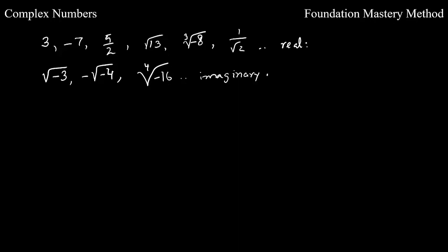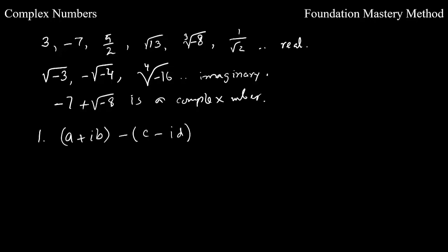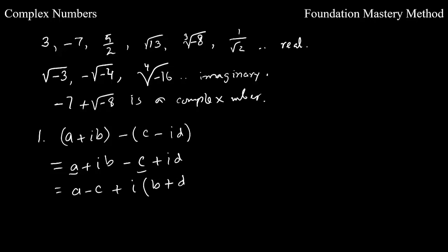When you combine real and imaginary together, we call it a complex number. For example, negative 7 plus square root of negative 8 is a complex number. Suppose you have (a + ib) minus (c + id). To simplify, distribute the negative sign: a + ib minus c minus id. Group the real parts: a minus c, and factor out i from the imaginary terms: i(b minus d). So the real part is a minus c and the imaginary part is b minus d.